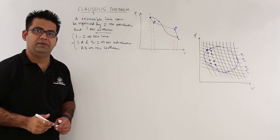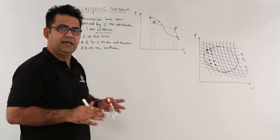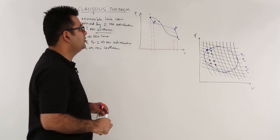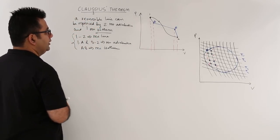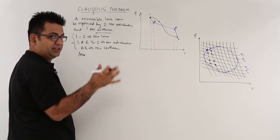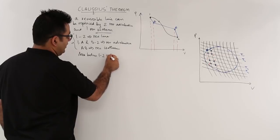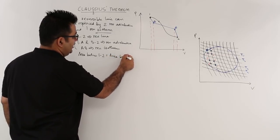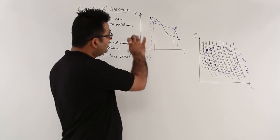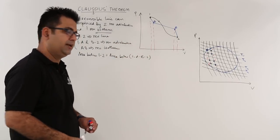This replacement is done in such a way that the area below the curve 1-2 is equal to the area below the lines 1-A-B-2. This means that the work done in both cases — the original reversible line and the replacement — would be the same.